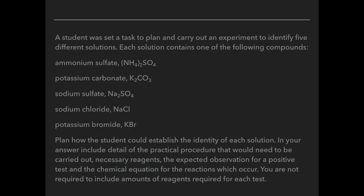We'll use this question, which is basically a scenario of a student being asked to plan and carry out an experiment to identify five different solutions. You need to plan how the student could establish the identity of each solution, including the detail of the practical procedure, any necessary reagents, expected observations for a positive test, and the chemical equation for the reactions that occur. You're not required to include amounts of reagents required for each test.